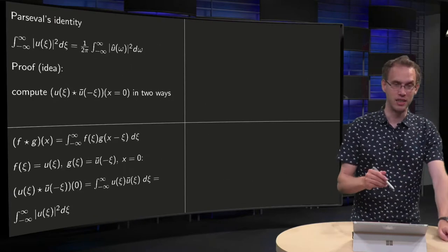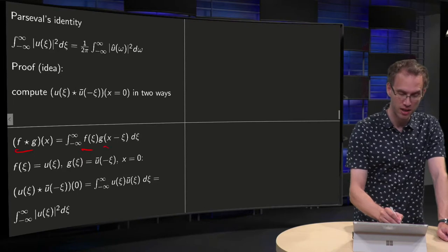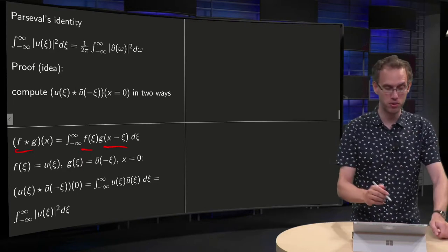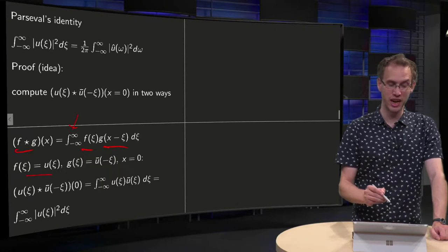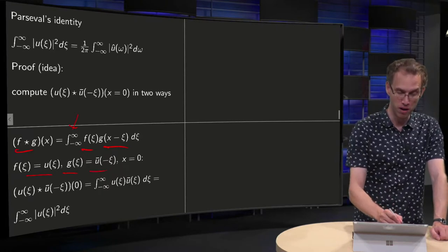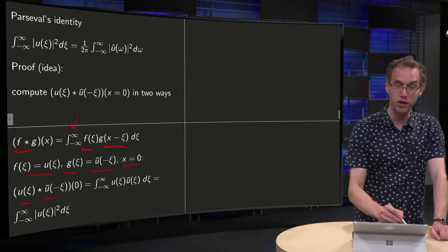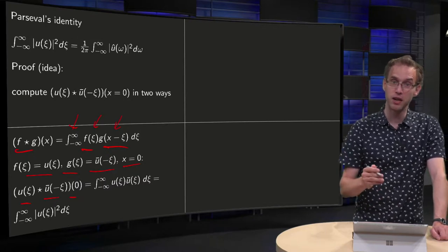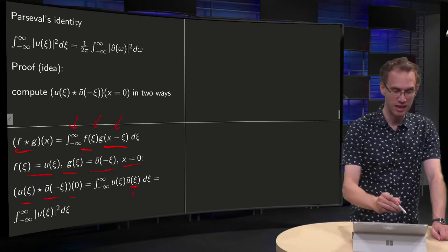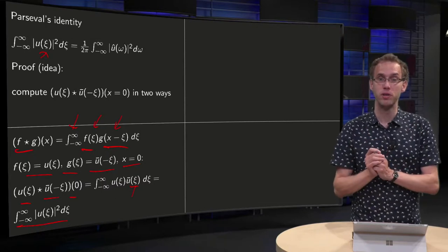The first way is easy. Remember the convolution of f and g: (f ⋆ g)(x) is obtained by integrating f(ψ) · g(x − ψ) with respect to ψ from −∞ to ∞. We set f(ψ) = u(ψ) and g(ψ) = ū(−ψ), and set x = 0. Then (u ⋆ ū(−·))(0) gives u(ψ) times ū(ψ), yielding the left-hand side: the integral from −∞ to ∞ of |u(ψ)|² dψ.